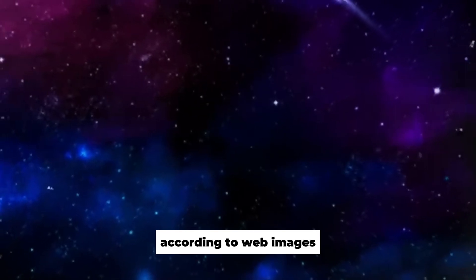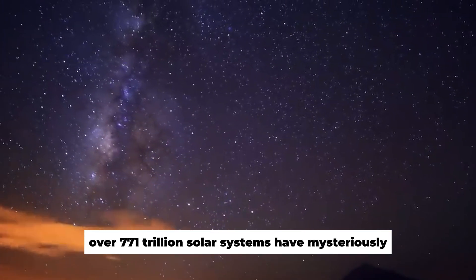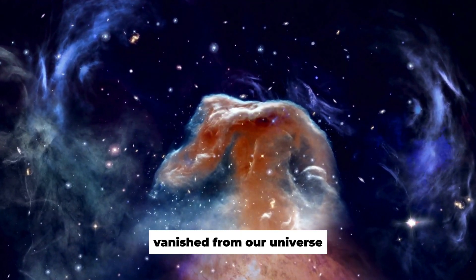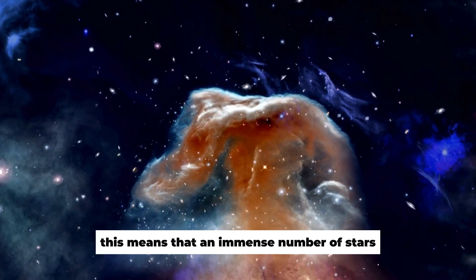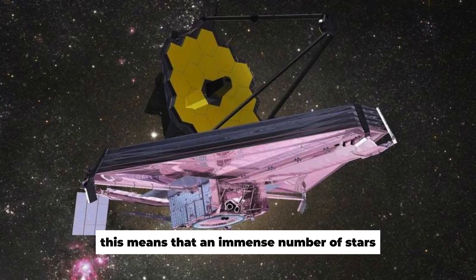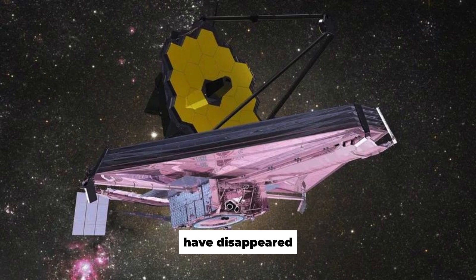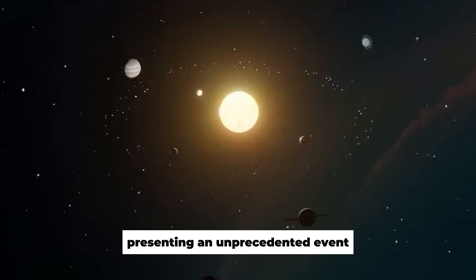According to Webb images, over 771 trillion solar systems have mysteriously vanished from our universe. This means that an immense number of stars and their associated planets have disappeared, presenting an unprecedented event.